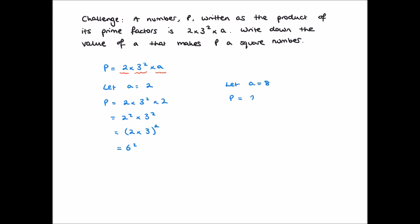Then p is 2 times 3 squared times 8. But of course, 8 is itself 2 cubed. So this becomes 2 to the fourth power times 3 squared.